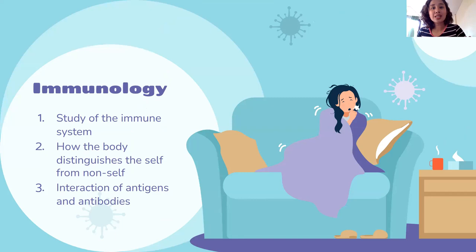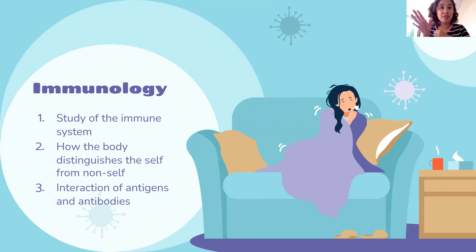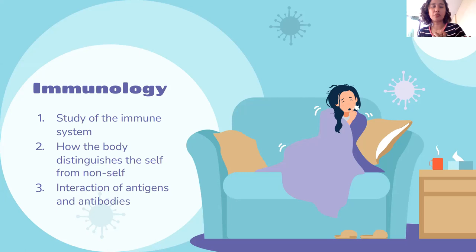So guys, basically immunology is the study of what happens in your immune system — its structure and its function. The immune system is in charge of distinguishing the self and the non-self. In normal situations, it shouldn't attack cells that are self. The only thing it attacks in normal settings is the non-self or foreign bodies like microorganisms and bacteria.